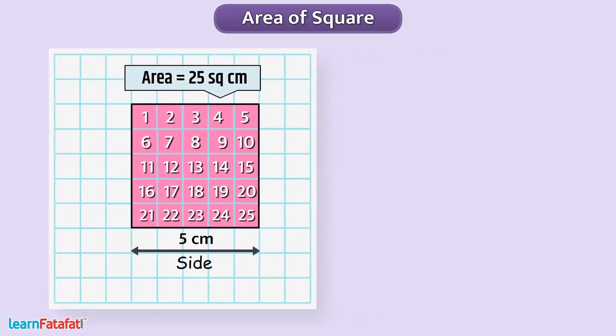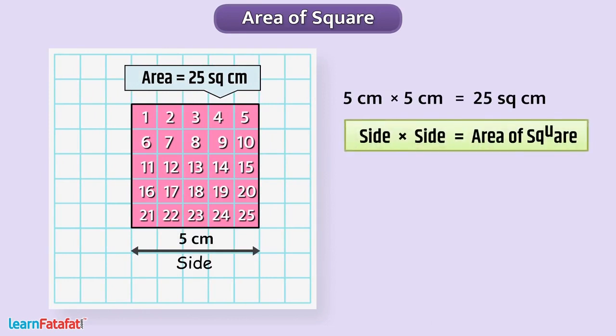Here also, if we multiplied the side of square with itself, then it gives the area of the square. That means, we can write the formula for area of square as, side multiplied by side, or simply,